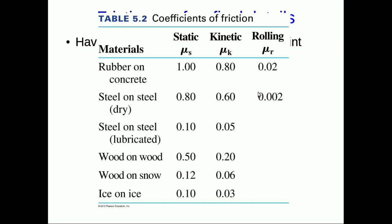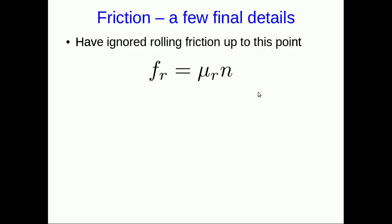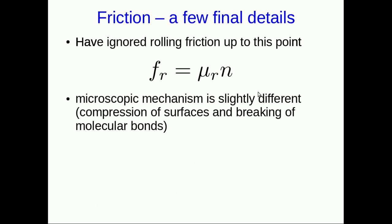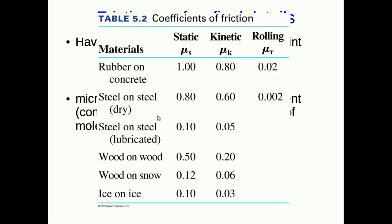So rolling friction has a tendency to be quite a small force. Its mechanism is a little different from the other frictions. It's still due to breaking of molecular bonds, but it's also due to compression of the surfaces. And that actually tells you there's something else going on here.